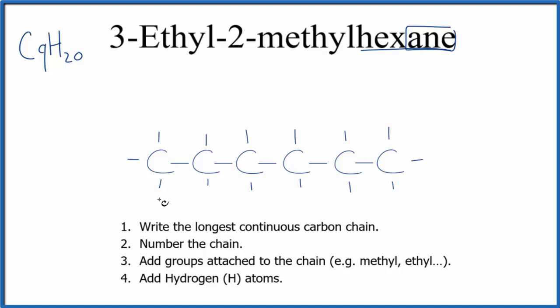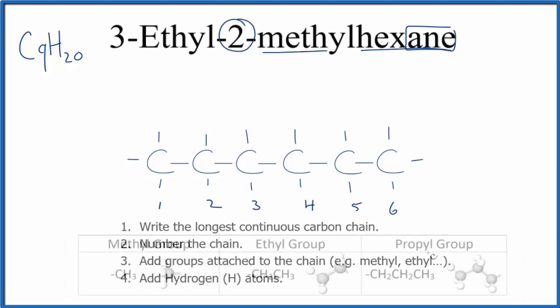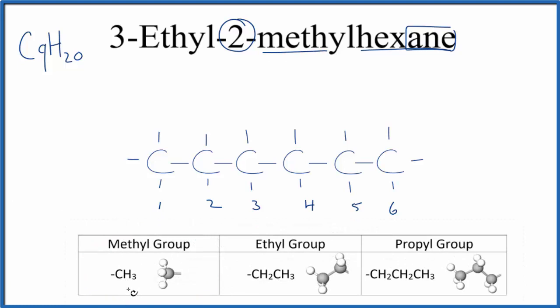Let's number the chain starting with one. We'll have six carbons - that's our hexane. On the second carbon, we're going to have a methyl group. A methyl group is just a carbon with three hydrogens.